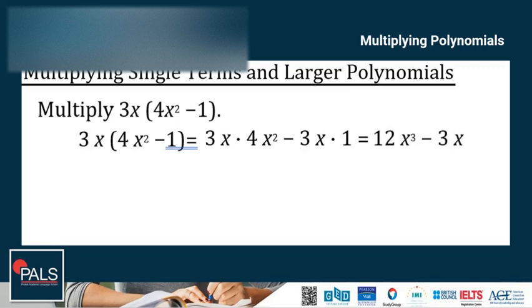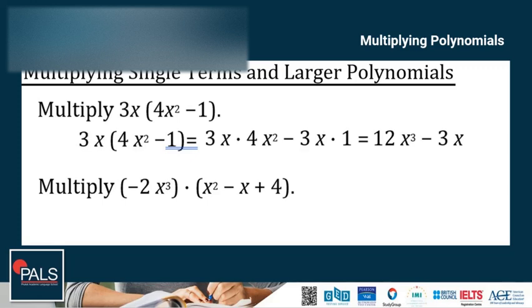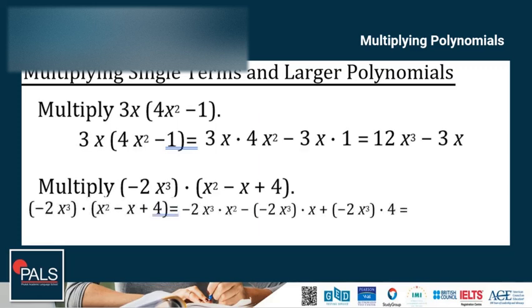The result is 12x cubed minus 3x as the final answer. Another example: negative 2x cubed times the quantity x squared minus x minus 4. Distributing negative 2x cubed to each term in the larger polynomial, and simplifying by combining like terms, the final answer is negative 2x to the 5th plus 2x to the 4th minus 8x cubed.